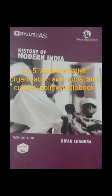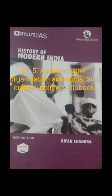History of Modern India, Chapter 5: Administrative Organization and Social and Cultural Policy. We have seen in the previous chapter that by 1784 the East India Company's administration of India had been brought under the control of the British government, and that its economic policies were being determined by the needs of the British economy. We will now discuss the organization through which the company administered its recently acquired dominion.